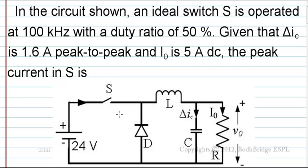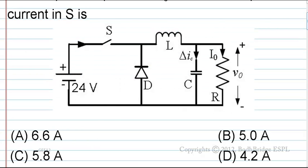Given circuit is here and the options are: (a) 6.6A, (b) 5.0A, (c) 5.8A, (d) 4.2A.